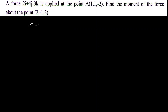The moment of force is given by M equal to R cross F. The force vector F is equal to 2i plus 4j minus 3k. Point A is (1, 1, -2) and point B is (2, -1, 2).